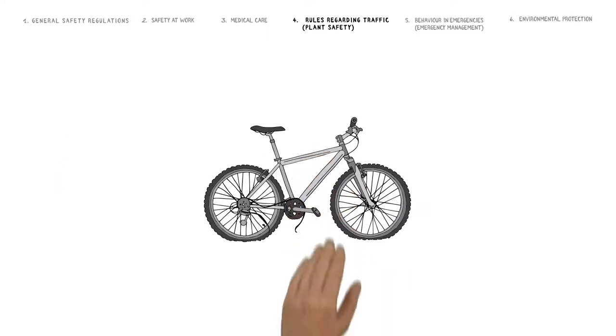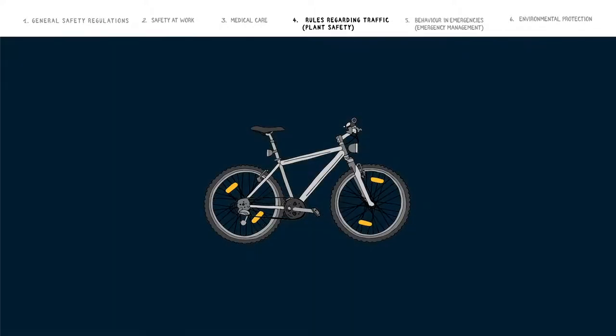All bicycles used on site must comply with standards in terms of their road worthiness and equipment: brakes, bells, lights, reflectors, etc. Lighting should be switched on promptly at dawn and dusk.